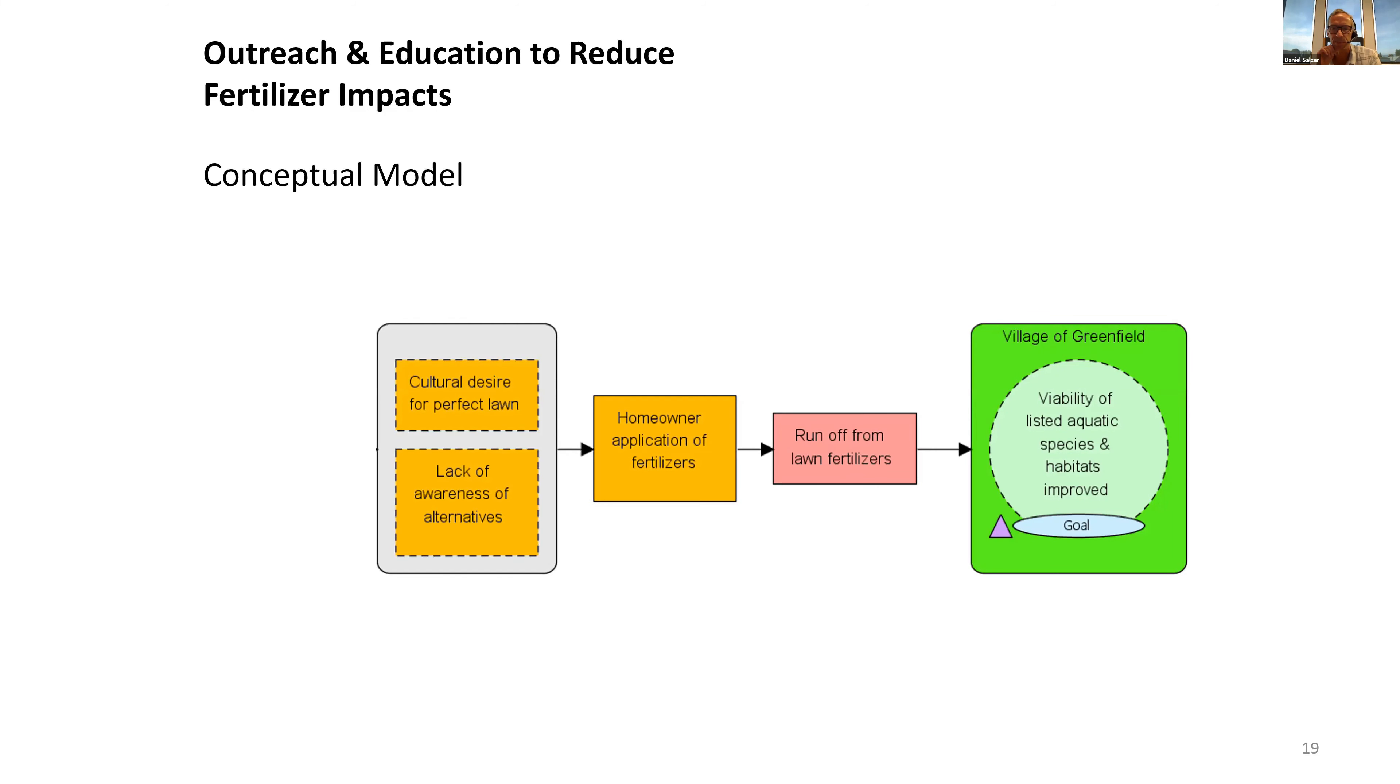If we take a look at a simple example, here's a conceptual model for a water quality issue affecting aquatic conservation. We have an issue with fertilizer runoff identified as a key threat. Homeowners using fertilizers are the main source.